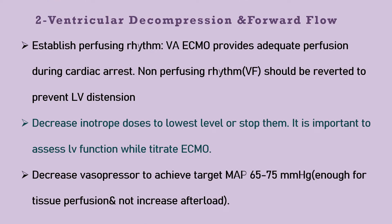The second part of ECMO circuit initiation is ventricular decompression and forward flow. Establishing a perfusing rhythm in VA ECMO can provide adequate perfusion during cardiac arrest. If there is no perfusing rhythm — such as ventricular fibrillation — we should revert it to prevent left ventricular distension. Decrease inotrope doses to the lowest level or stop them. It's important to assess left ventricular function while titrating ECMO. Decrease vasopressors to achieve a target mean arterial blood pressure of 65 to 75, which is enough for tissue perfusion without excessively increasing afterload.